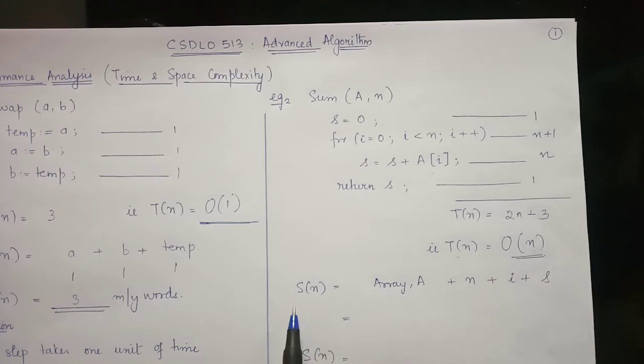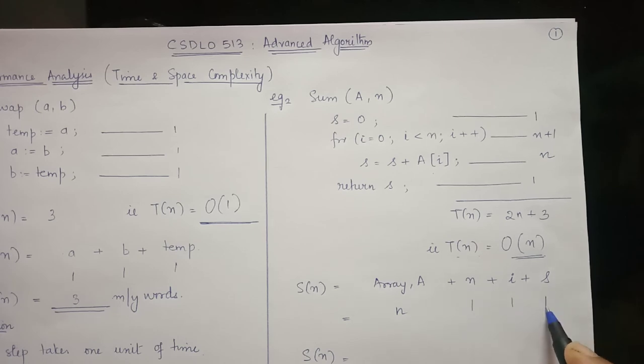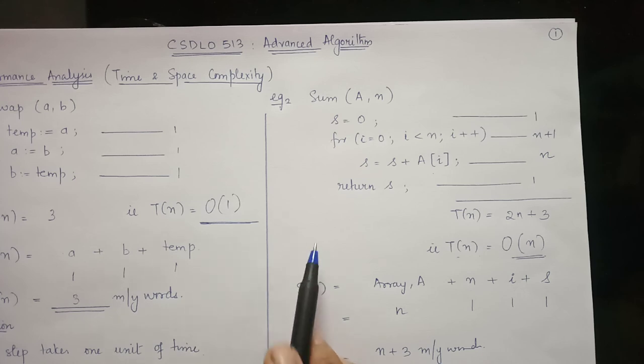Now coming to the space complexity. Here we have an array of size n and there are three variables n, i and s, each occupying one unit of memory. So here we can say n plus 3 memory words are required for this code snippet to execute. In short, the space complexity of this code is n plus 3 memory words.